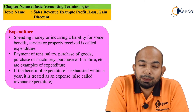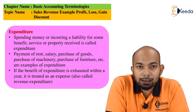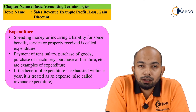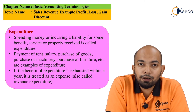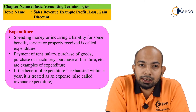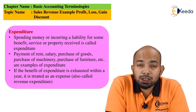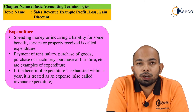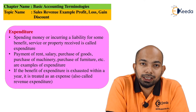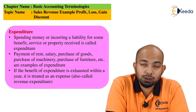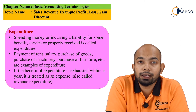Revenue expenditure is a certain expenditure that you have to keep incurring on a monthly basis or at specific intervals — it may be quarterly, monthly, half-yearly, or yearly. The benefits of the same are enjoyed for a specific period of time. For example, if you have paid rent for the month of May, you have enjoyed that expenditure only for the month of May. If you want the benefit for the next month, you have to pay the rent again.